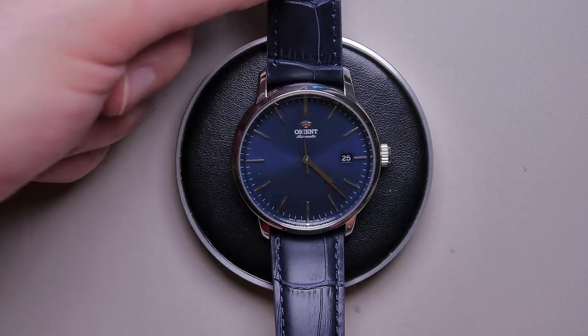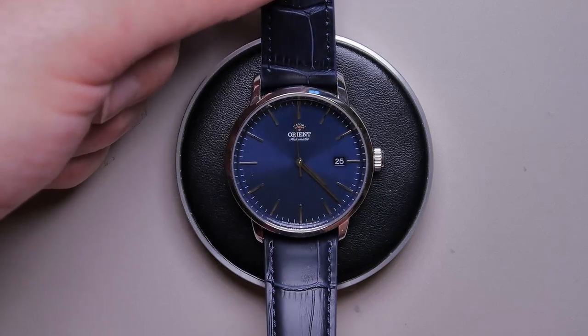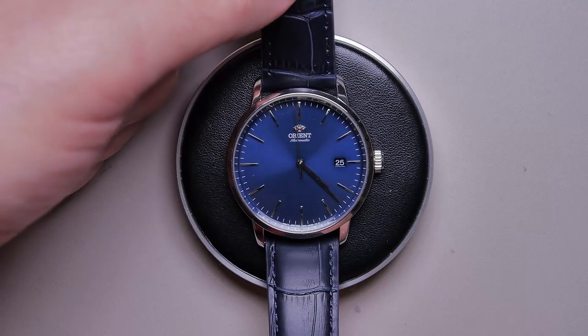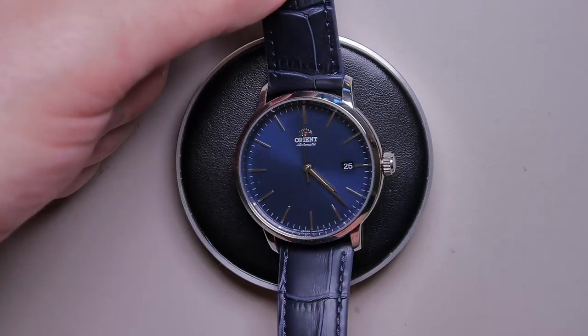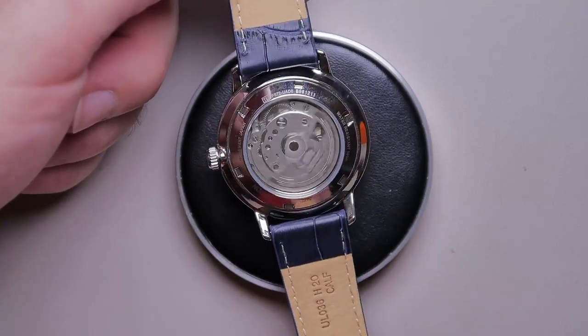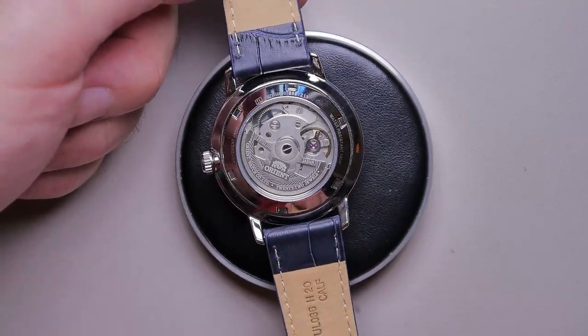What we have here is a very inexpensive but beautiful simple dress watch from Orient. Very inexpensive, don't pay more than 150 bucks for something like this. They are a very old Japanese brand. They use very durable but no frills movements.